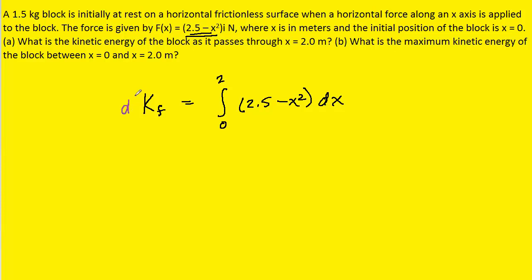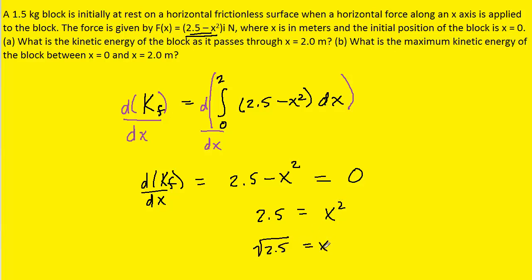If we take the derivative of the left-hand side, we're just taking the derivative of the kinetic energy with respect to x. And then we have to take the derivative of this integral with respect to x. Basically, the derivative of an integral cancels the integral. And so we're actually left with, on the right-hand side, just the 2.5 minus x squared. And so once we have that derivative, calculus instructs us to set that derivative equal to 0. That's how we find the maximum or minimum value. So we can now add x squared over to the right-hand side, and then take the square root. And so we can see that when x is equal to the square root of 2.5, we will have our maximum kinetic energy.